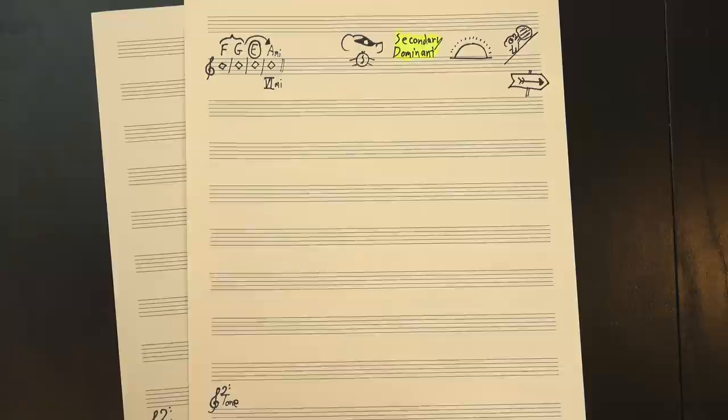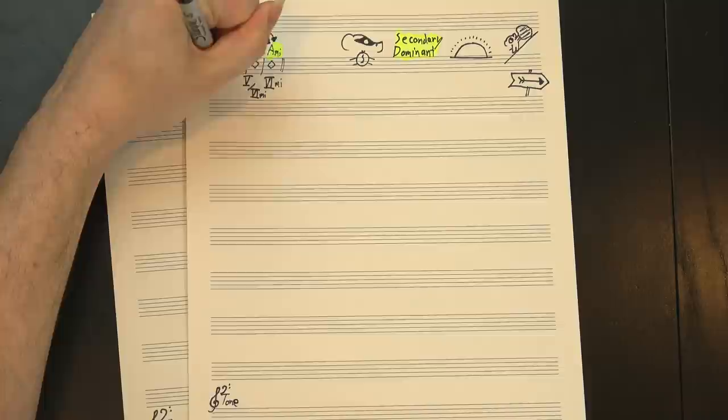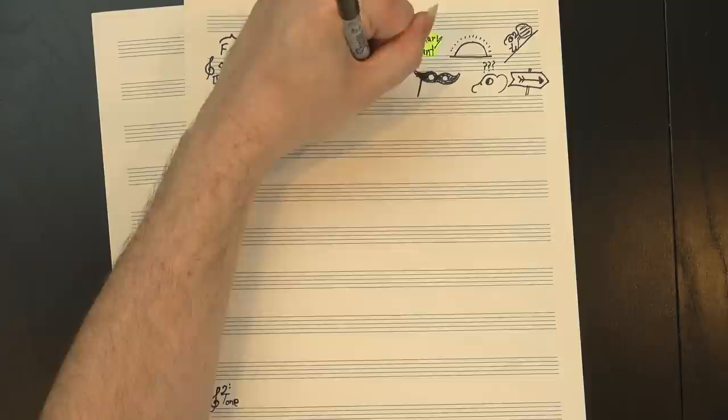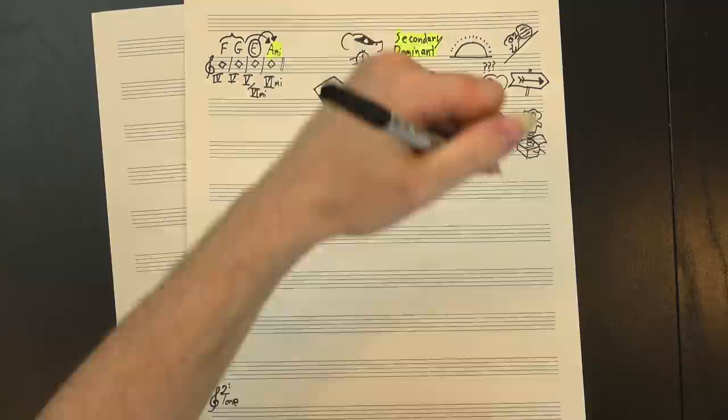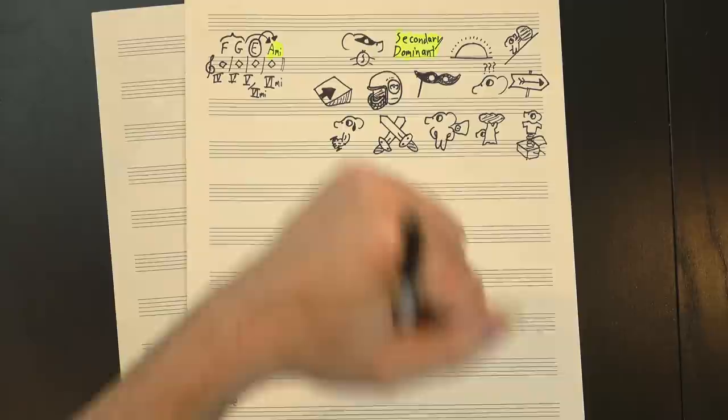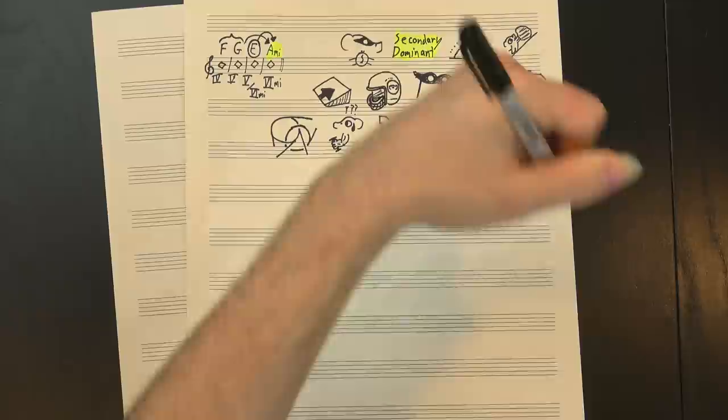But if that's what's happening, how do we explain the F and G? What are they doing there? We can't really call it a deceptive cadence anymore. The deceptive cadence is a harmonic fakeout, a musical bluff that sets you up for a strong resolution, and then surprises you with a weaker one. It's a sneaky move, but the secondary dominant is anything but sneaky. The two analyses disagree. The secondary dominant implies strength, while the deceptive cadence demands weakness. If we smash them together, the end result is confusing. But when I listen to this section, I'm not confused.